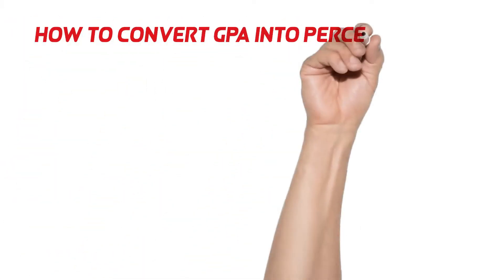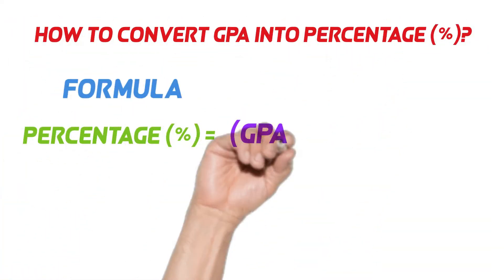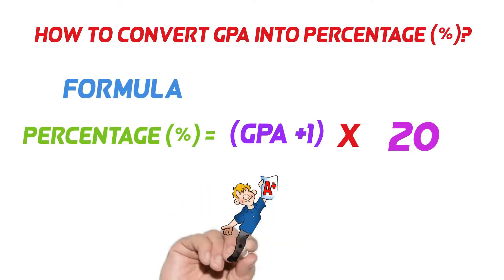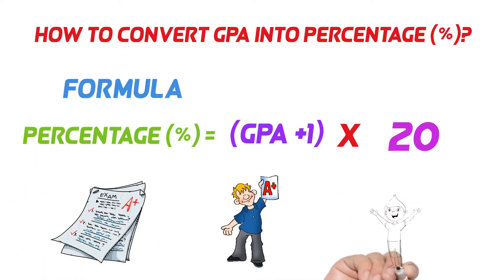Now we discuss how to convert GPA into percentage in the simplest and easiest way. For GPA to percentage conversion, we use a formula. In this formula, the percentage is equal to GPA plus 1 and multiply with 20.